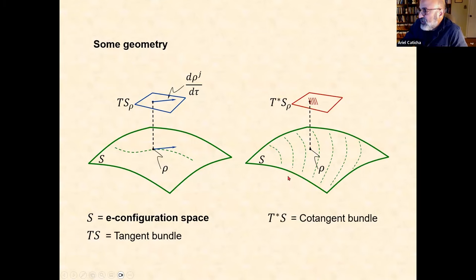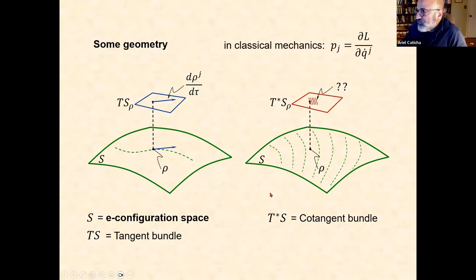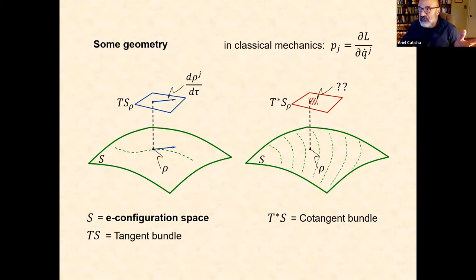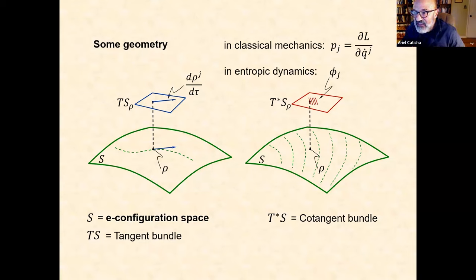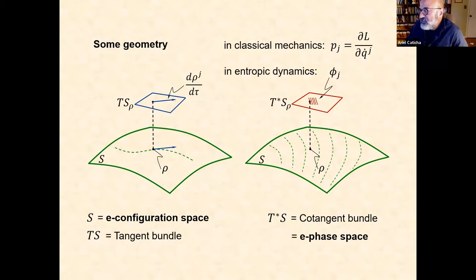We just proceed by saying there will be co-vectors, and we make the connection to those drift potentials. It is this cotangent bundle — the epistemic phase space — that forms the phase space in which the whole dynamics will happen. Once we have rho and phi, a point in this epistemic phase space is given by rho and phi. The coordinates are given by a composite index: alpha denotes rho and phi, with j denoting which particular probability and its phase we're talking about.